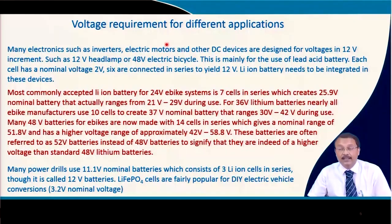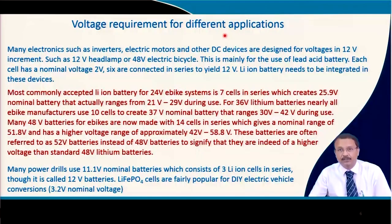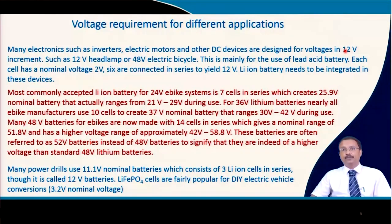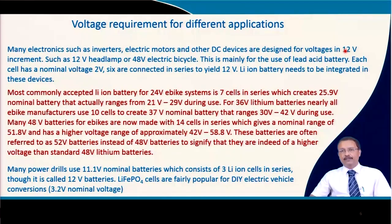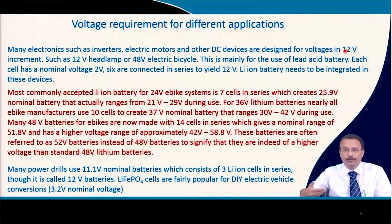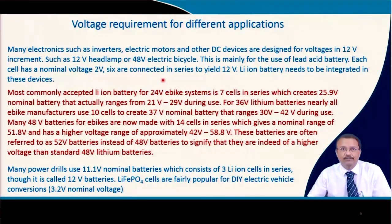Voltage requirements vary depending on the application. Many electronics such as inverters, electric motors, and other DC devices are designed to work in 12 V increments, and there is a historical reason for this. Lead-acid batteries came first, and each cell gives 2 V, so connecting 6 cells in series gives 12 V. That is why 12 V, 24 V, 36 V, and 48 V — multiples of 12 — became standard.